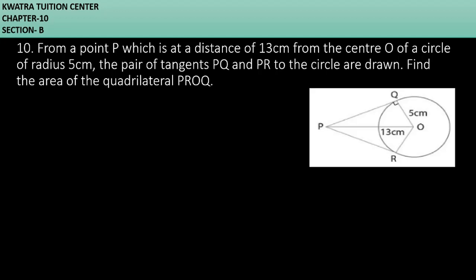So we have a quadrilateral area. How can we find out? As we know, the angle at the point of contact is 90 degrees. This one is 90, this one is 90 as well.